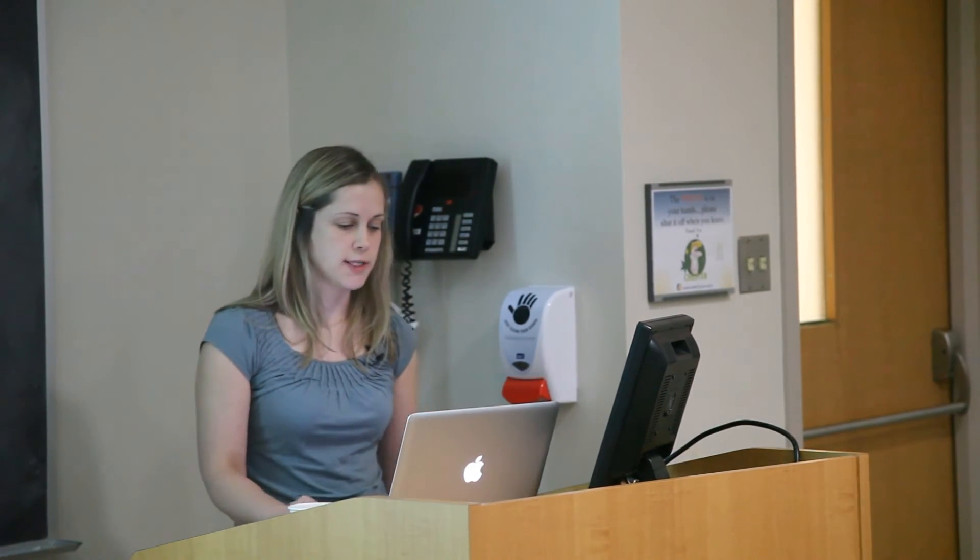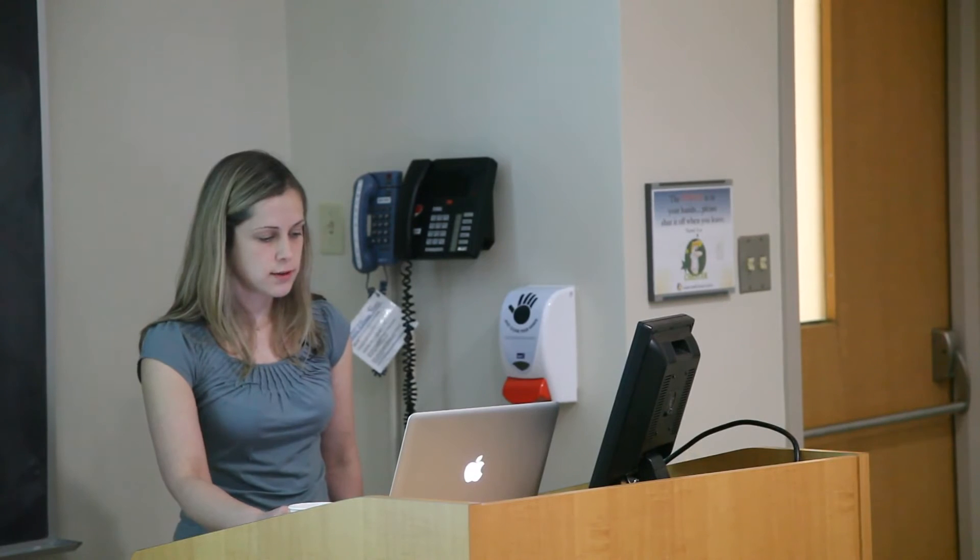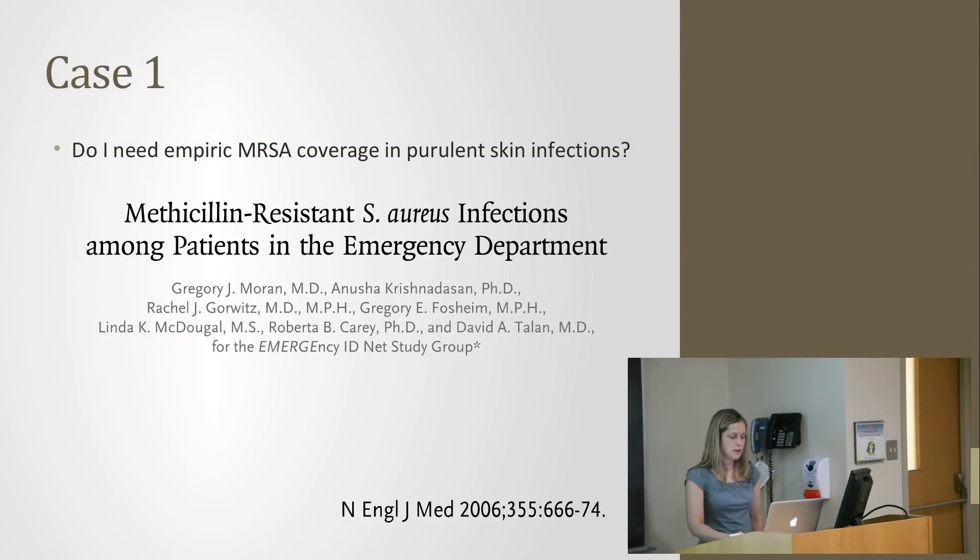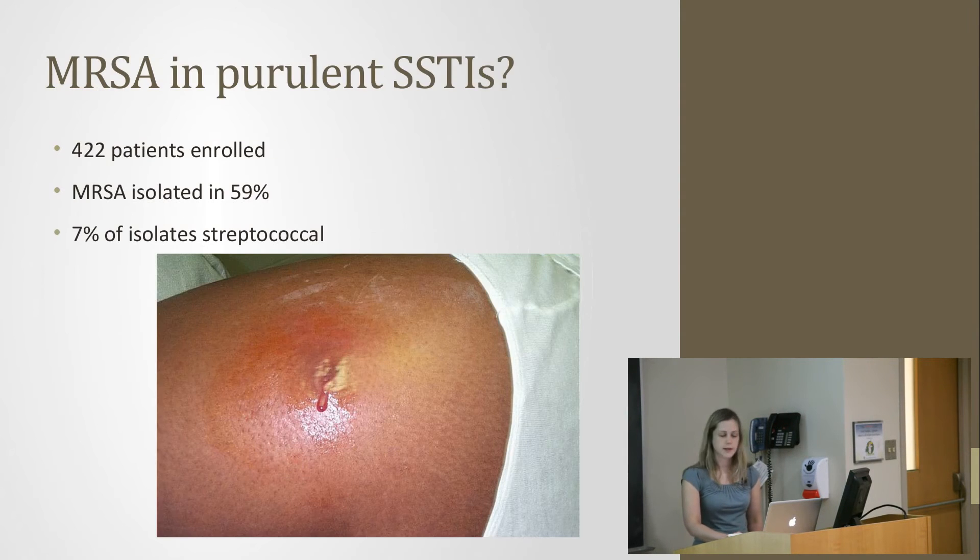The second question I had about that case was whether or not I always need empiric MRSA coverage for purulent skin infections. There's actually a lot of studies out there about this. I chose to talk about one in the New England Journal of Medicine because it's very comprehensive, and the second one I chose because it was done here in London so it has implications for our local practice and sensitivities. The New England Journal study was a prospective prevalence study of adult skin and soft tissue infections. They looked at emergency departments in 11 US cities, excluded perirectal abscesses, and swabs of all purulent sites were cultured.